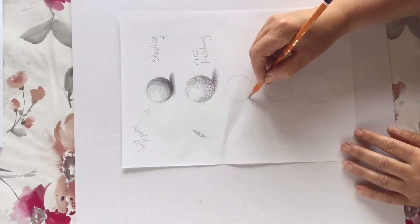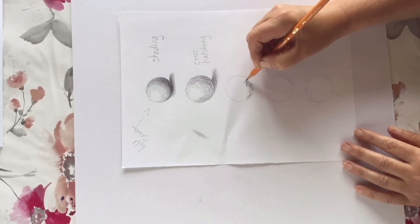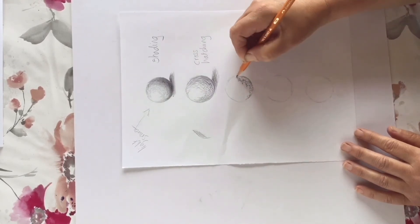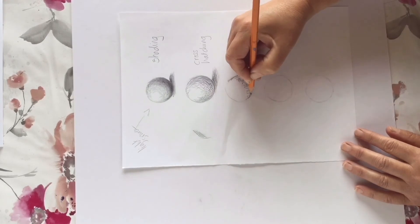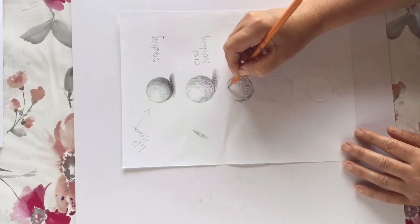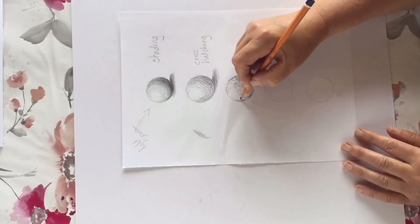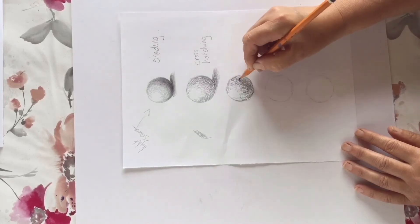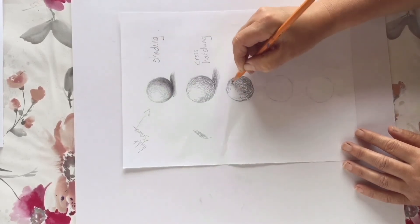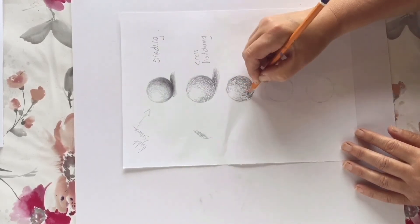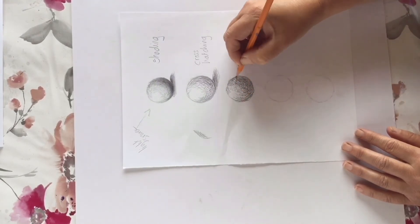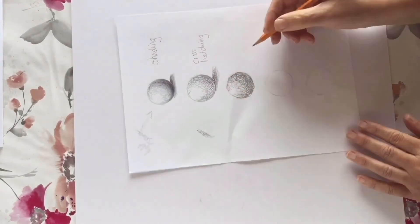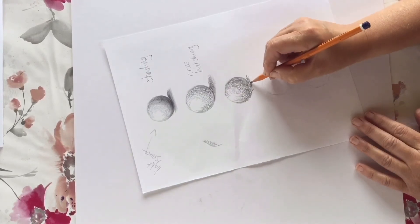The next technique is called scumbling. This is one of my favorites. It's a nice loose style of putting wiggly lines and marks down on a page. You can really have fun with this one. Again, a bit like the cross hatching, you're trying to build up the dark tones by the lines crossing over each other, but it's way more loose. There are no real rules for scumbling. Just let your pencil dance across the paper. I'm even going to use the scumble technique for the shadow.